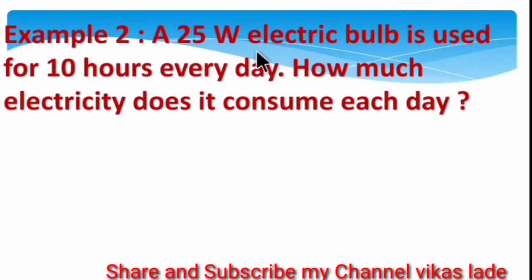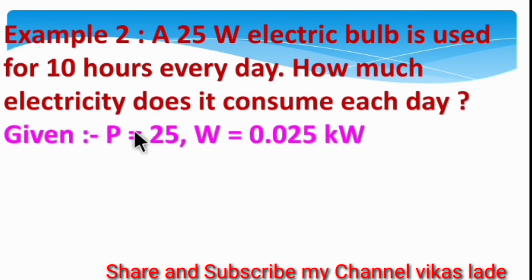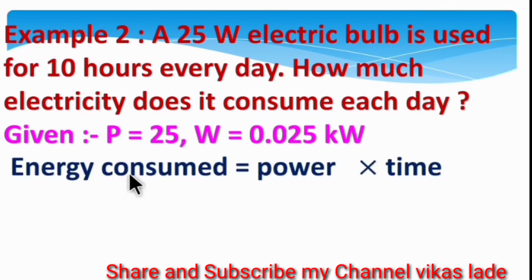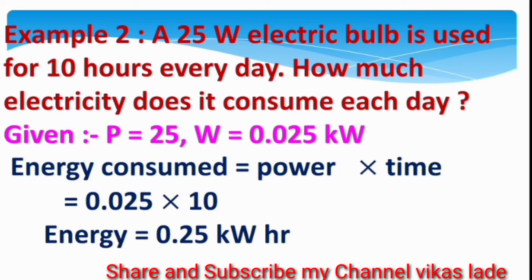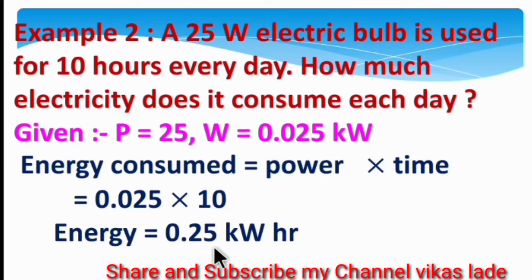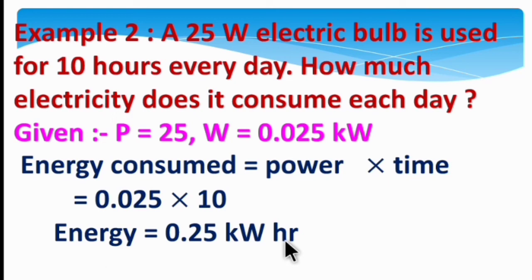Example 2: A 25 Watt electric bulb is used for 10 hours every day. How much electricity does it consume each day? Given: power = 25 Watts. Convert 25 Watts to kilowatts: 25 / 1000 = 0.025 kilowatts. Energy consumed = power × time = 0.025 × 10 = 0.25 kilowatt-hours. Therefore, the electricity consumed each day is 0.25 kilowatt-hours.